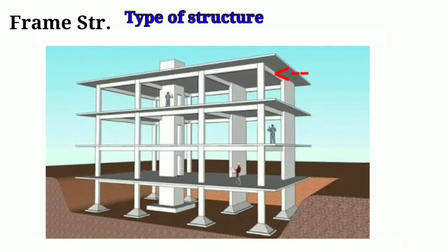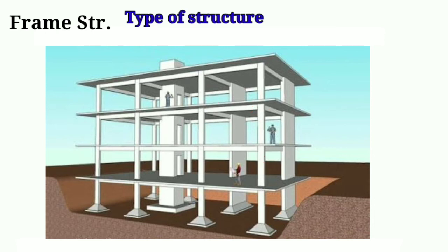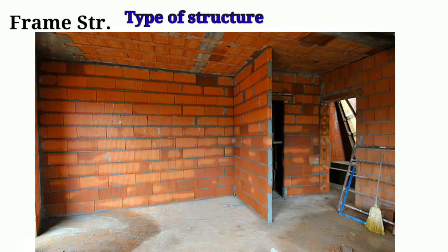Frame structures consist of a frame of horizontal and vertical members called beams and columns. The slabs and roof rest on the beams. The load transfer mechanism is such that the load of the slab and roof is transferred to the beam, beam to the column, column to the footing, and then footing to the hard strata.